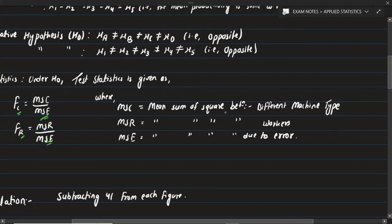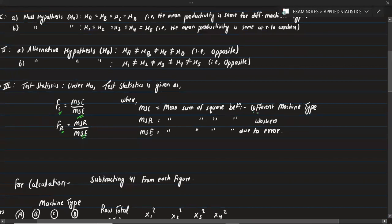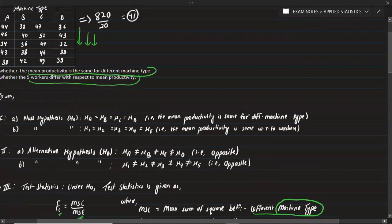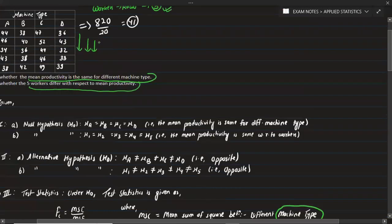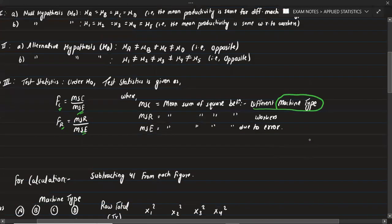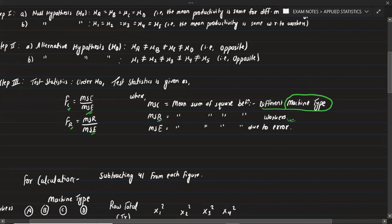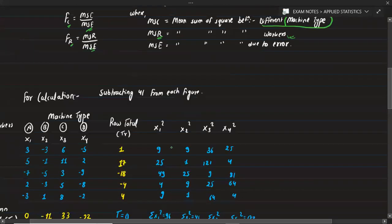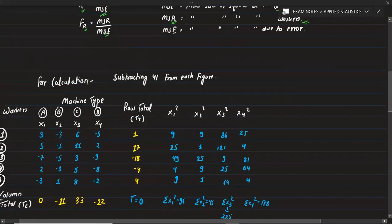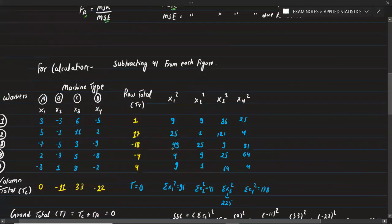MSC means sum of squares between different machine types (columns). MSR means sum of squares between different workers (rows). MSE means sum of squares due to errors. We proceed to the numerical calculation.